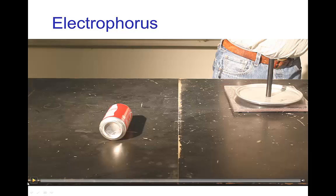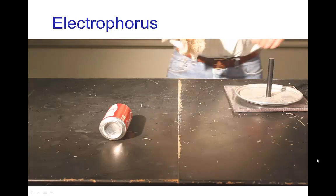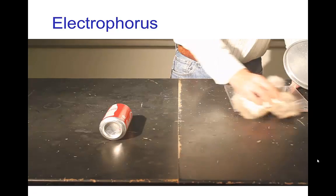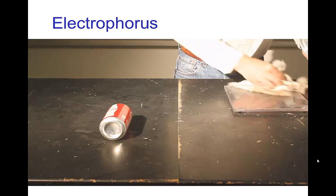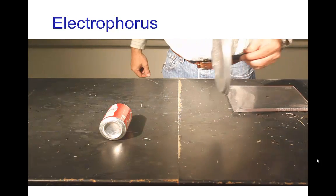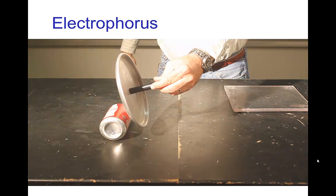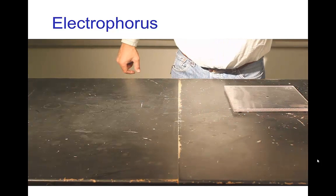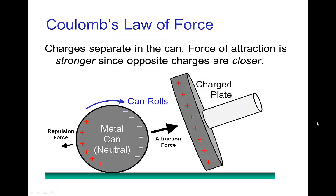Let's see what this looks like. Here you see on the right the electrophorus. I rub the plastic plate with the fur and place this on there. I have now charged the electrophorus, and you see that the metal can is attracted to the electrophorus plate.